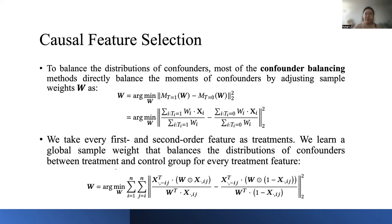To remove the confounding bias between the treatment and control group, we need to balance the distributions of confounders. Most of the confounding balance measures directly balance the moments of confounders by adjusting sample weights w. Here we suppose t as a treatment variable and set t equals 1 as a treatment group, t equals 0 as a control group.